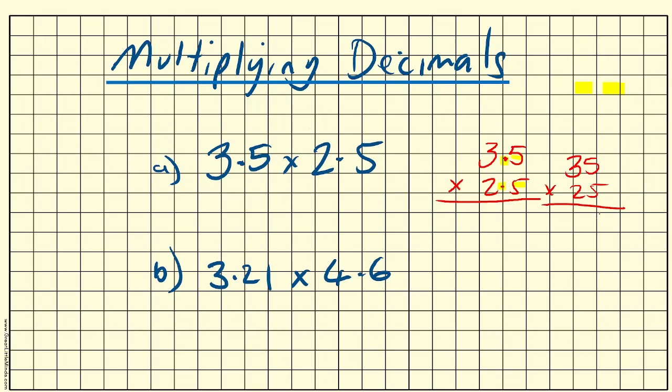So 5 times 5 gives me 25, 5 carry the 2. 5 times 3 is 15, add the 2 on and give me 17. Remember we need that placeholder because we're now times in by the tens column. 2 times 5 is 10, 0 carry the 1. And then 2 times 3 is 6, add the 1 gives me 7. So that's my sum complete.